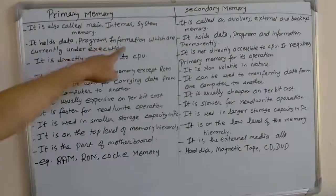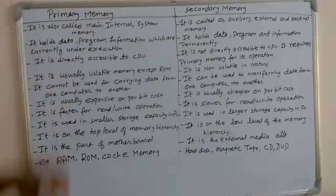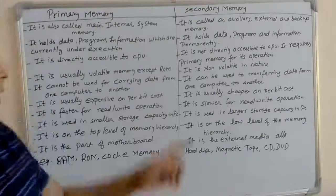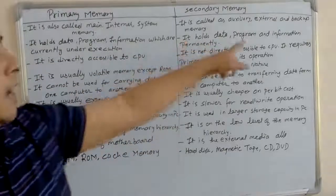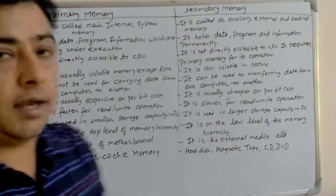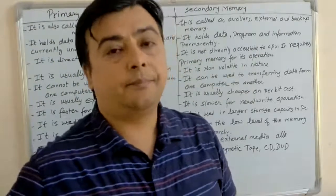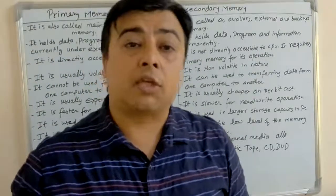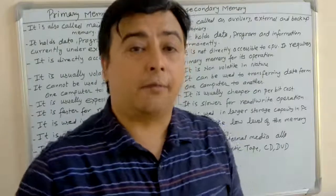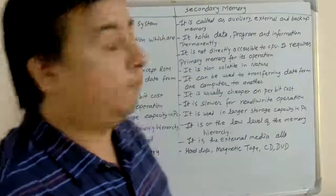The second difference is: primary memory stores data, programs, and information which are currently under execution. But secondary memory stores data, programs, and information permanently — we store data permanently for future use in secondary memory.